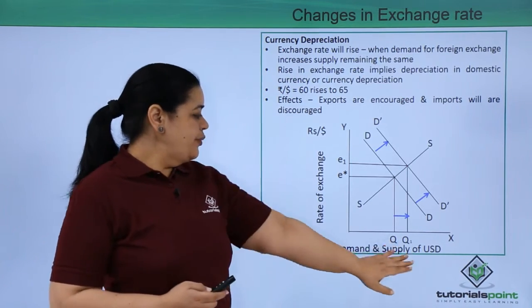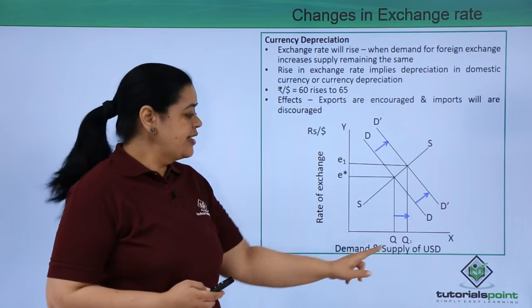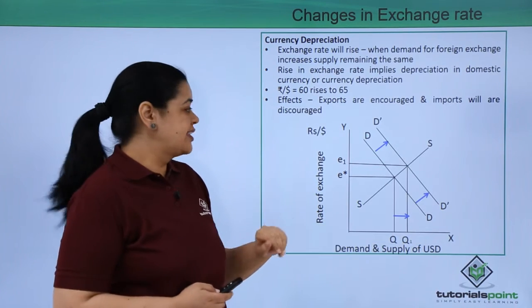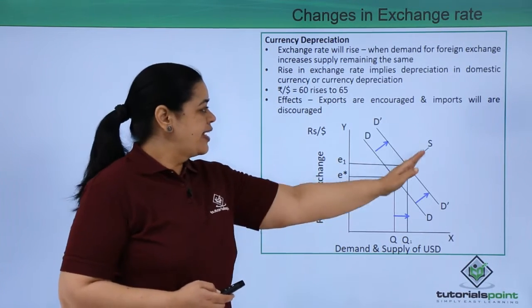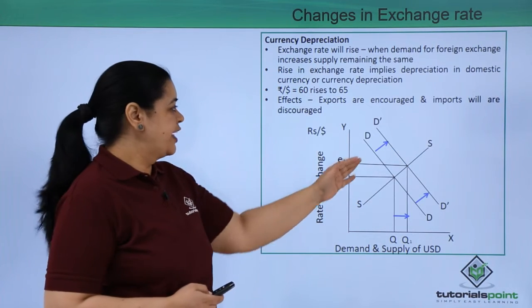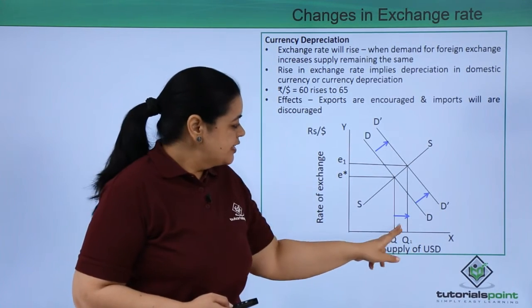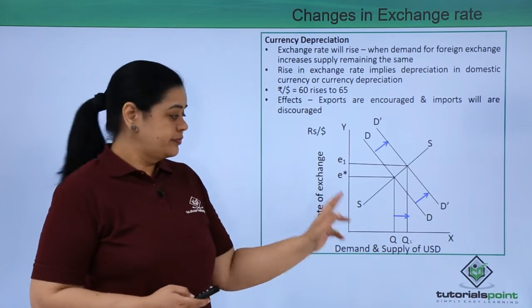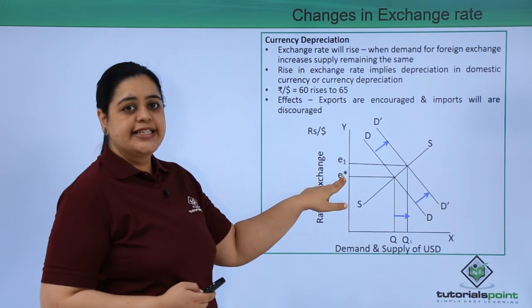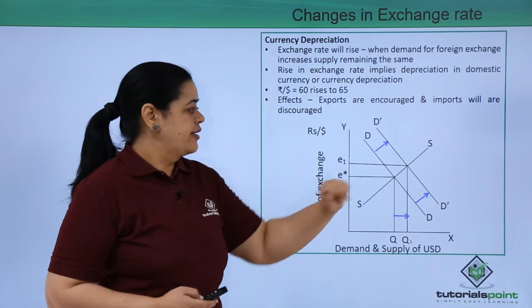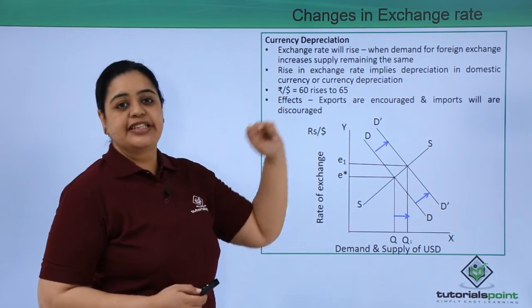If I have to see this diagrammatically, Q and Q1 is the quantity. There has been more demand in the USD, so you can see there is a rightward shift on the x-axis. Here supply remains constant, so there is no shift in the supply line, but the demand has increased from D to D1. That is the reason we are showing this arrow. Similarly, for quantity also, it is increasing on the right-hand side. So now my equilibrium, which was E* earlier, goes up to E1. That's the new equilibrium, and that's what the rise from 60 to 65 represents.